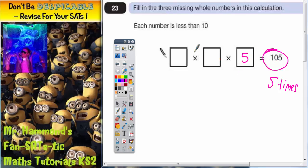So all we need to do now is figure out what the other two numbers need to be, so that when you times them together and times that result by 5, you get 105. Well, we can do something clever here.